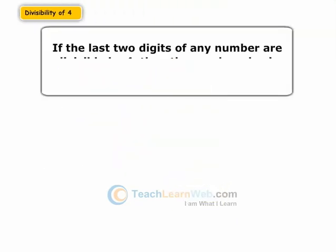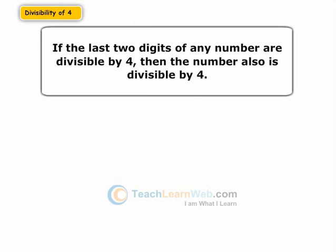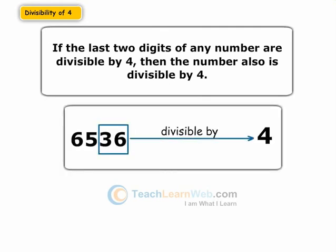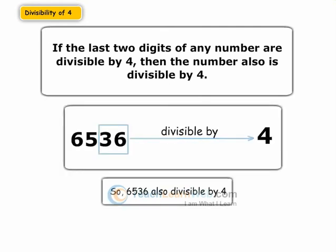If the last two digits of any number are divisible by 4, then the number also is divisible by 4. The last two digits of 6536 are 36, which is divisible by 4.